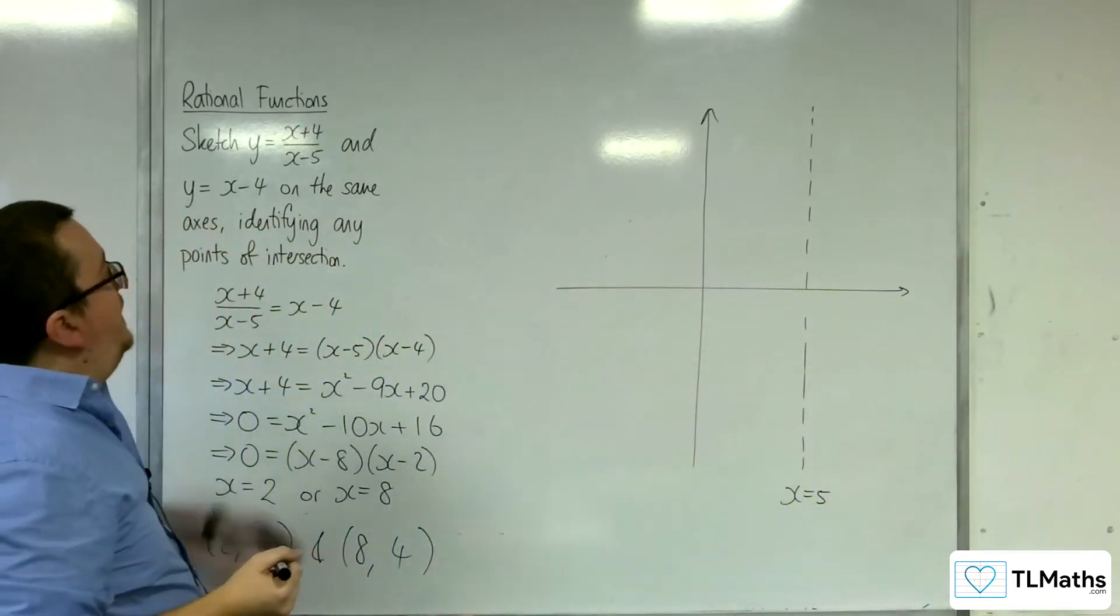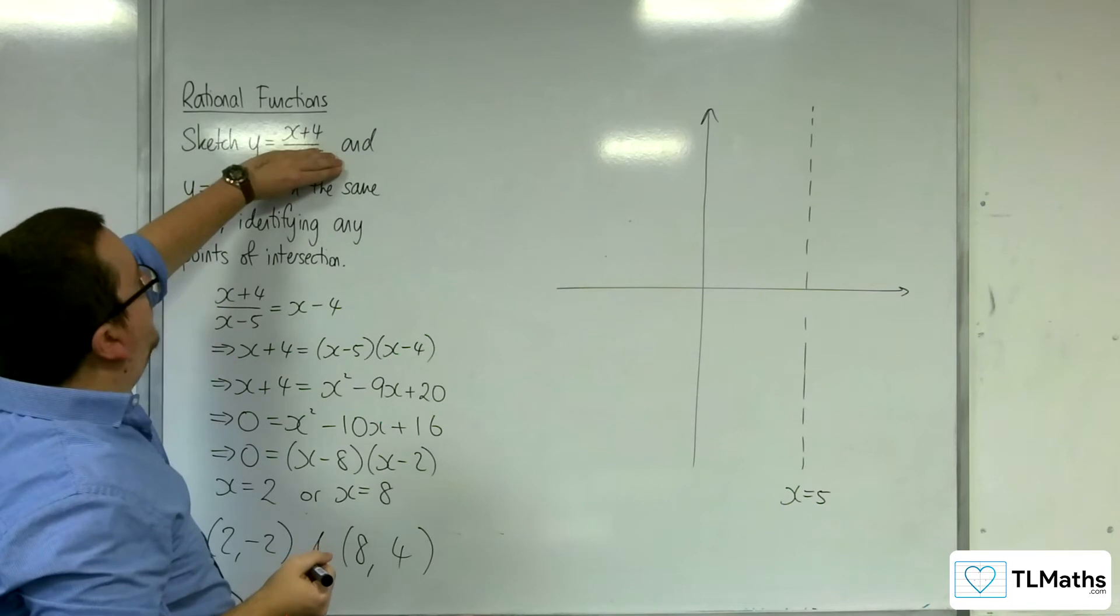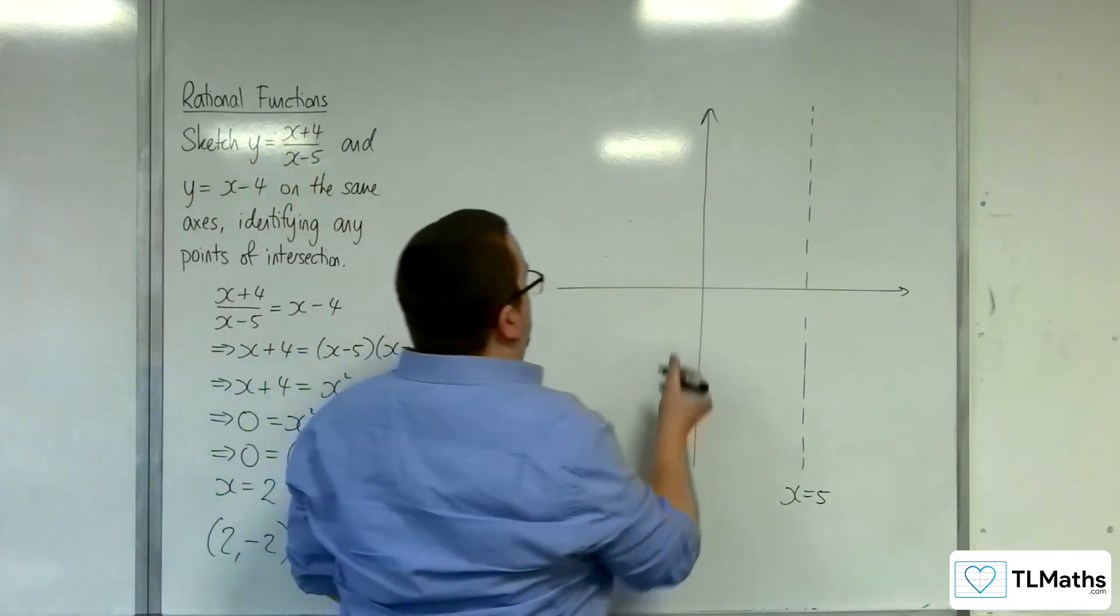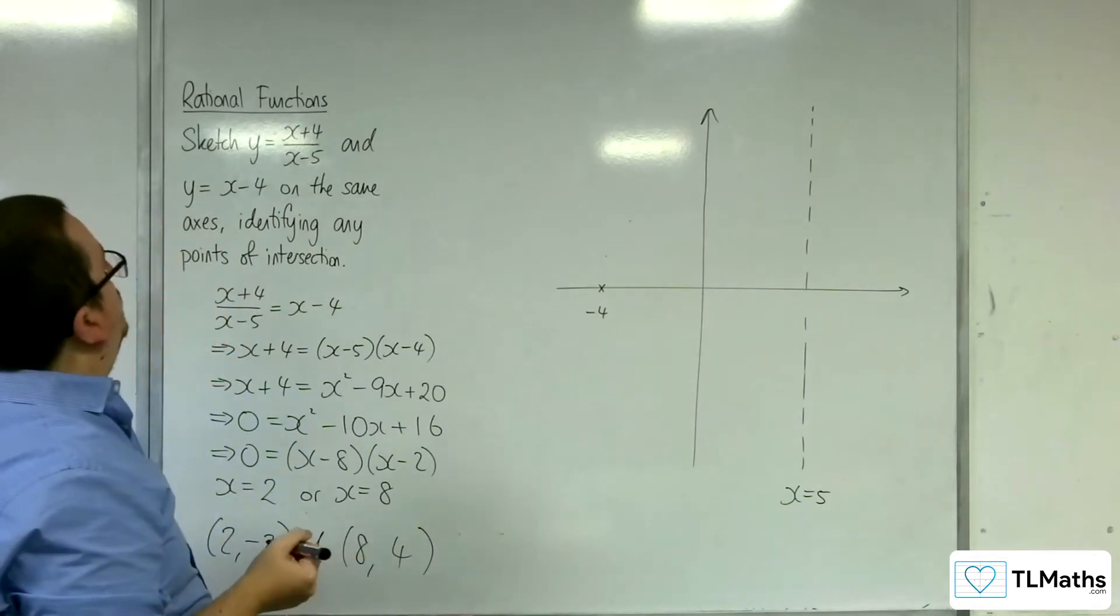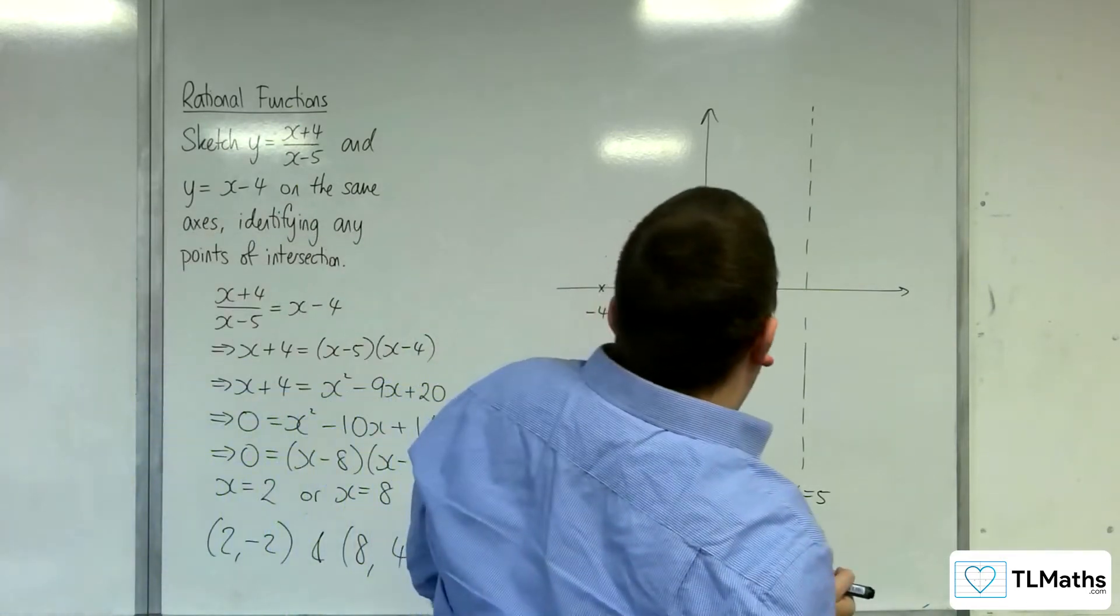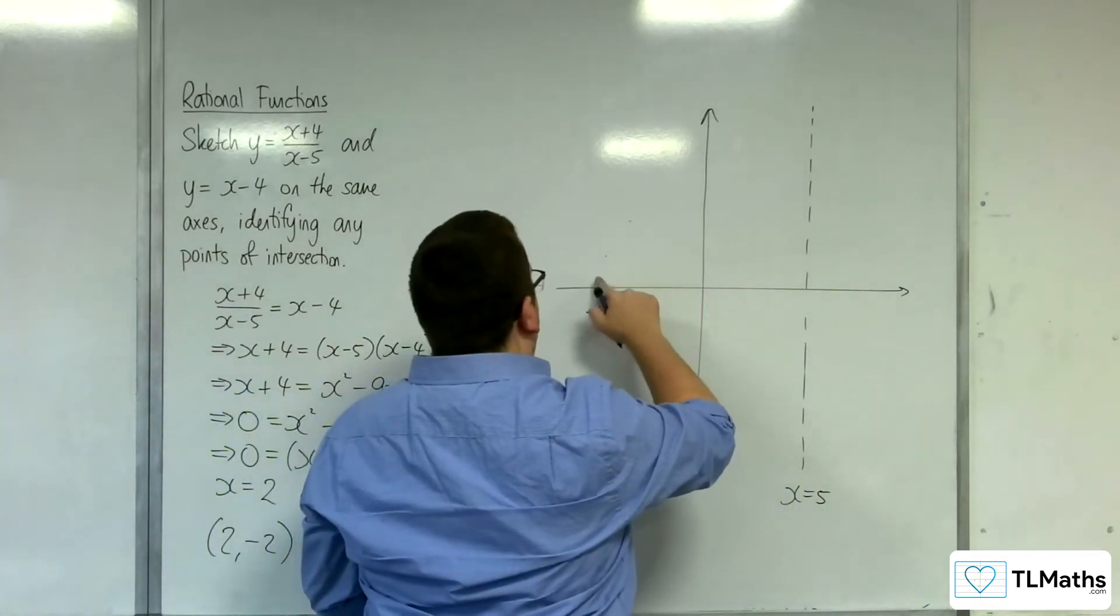And then where is it crossing the x-axis? That's when x is equal to minus 4, when the numerator is 0. Where is it crossing? It's probably a bit further actually. Let's get that a little bit closer.